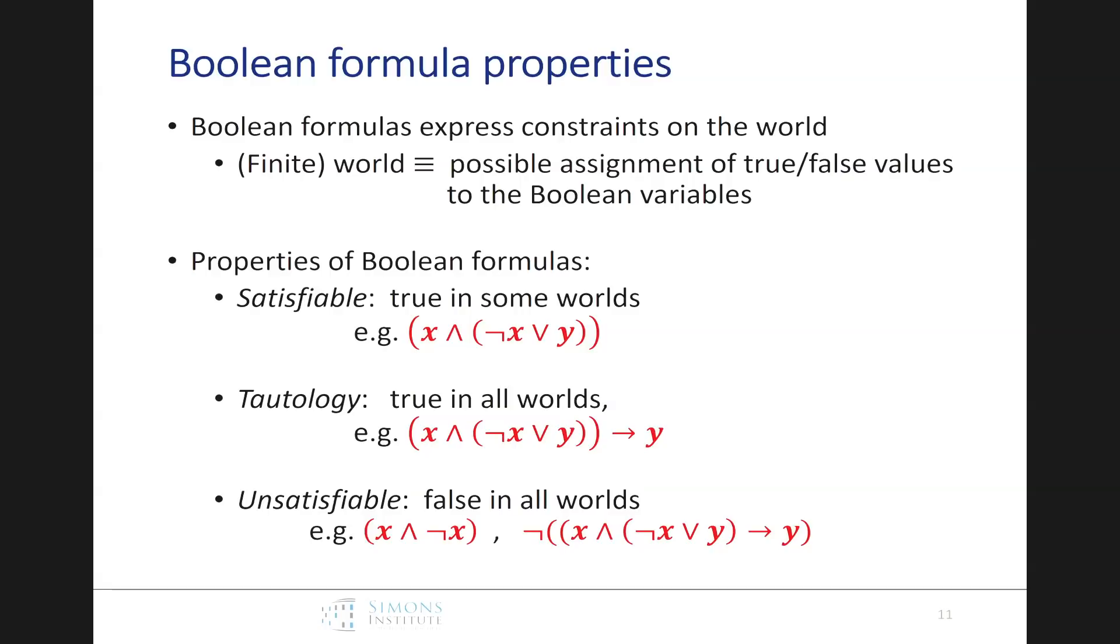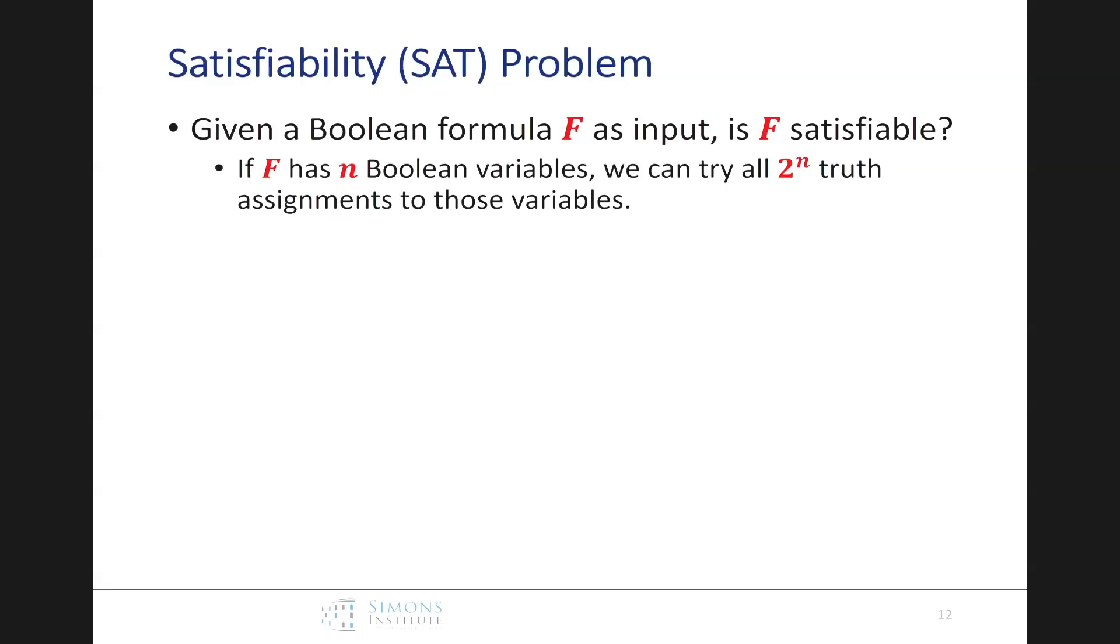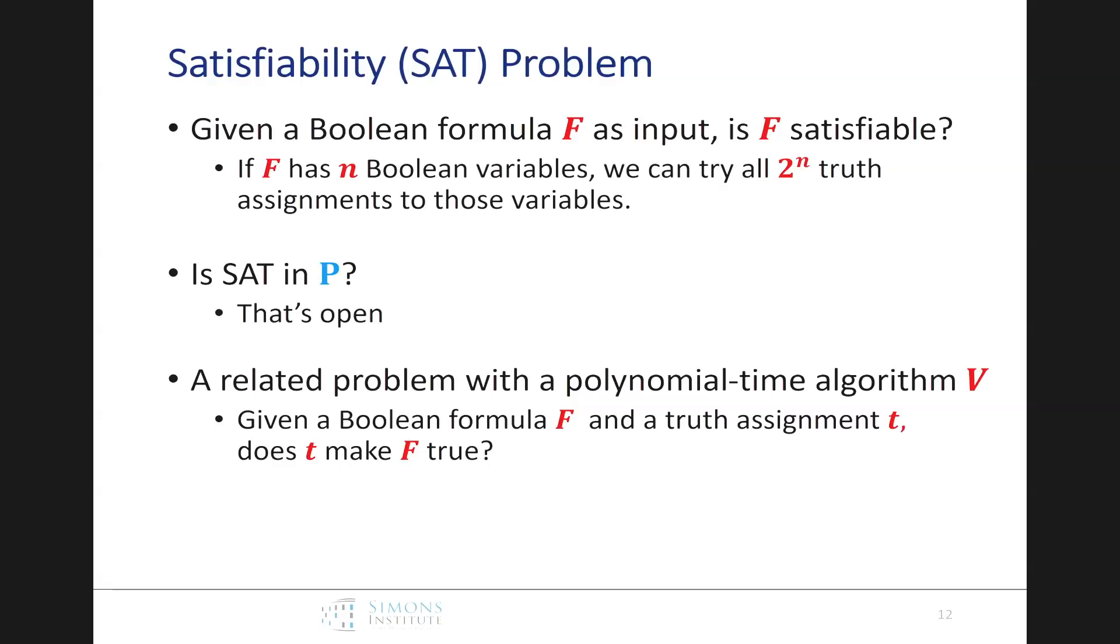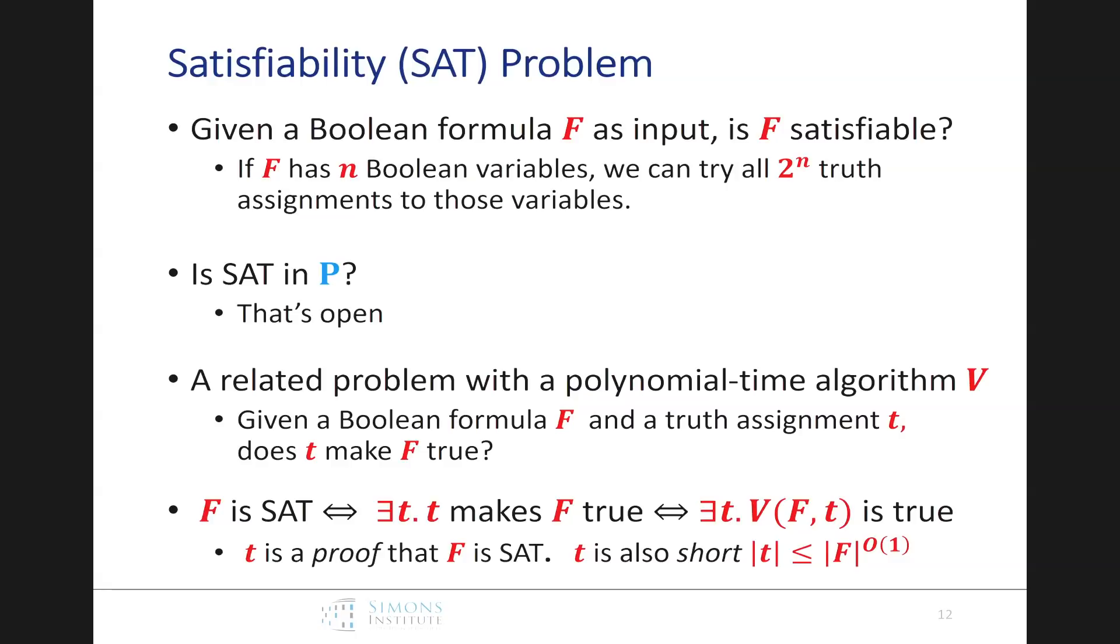So, we've got Boolean variables and connectives and or not and implies. So, what are the things we might want to understand about this logic? Well, we want to, the properties of Boolean formulas, these formulas express constraints that our world has to satisfy, and the worlds are possible assignments of true-false values to these Boolean variables. So, we've got properties like satisfiability. A formula is satisfiable, true if in some worlds. Tautology, it's always true, and unsatisfiable if it's always false in all possible words. So, here's a simple one, and it's nice you can go back and forth between tautology and unsatisfiability just by sticking knots in front. Okay, so the first of these problems that get tackled is the problem of satisfiability. You know, this audience, probably, we're going to be a little bored for the next couple minutes, but, so if it has Boolean variables, we can try all assignments. So, the question is, is this problem of deciding whether a formula is satisfiable, is it polynomial time?